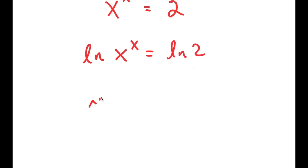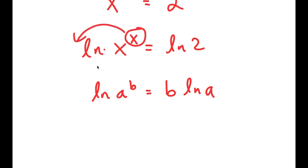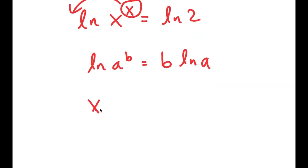Now, if I have something in the form ln of a to the power of b, this is equal to b times ln a. So I have ln of x to the power of x, and I can move x to the front. So now I get x times ln x is equal to ln 2.